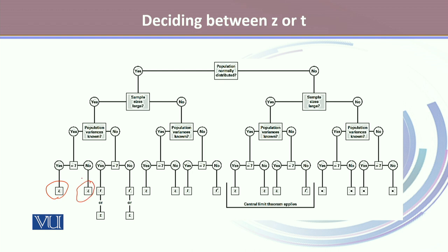The third scenario is when the population is normally distributed, sample size is large, and population variances are not known but are assumed to be equal. In that case, we can use either Z or T to calculate the reliability factor. However, T will provide more exact values compared to Z, which gives only an approximate value.